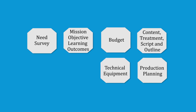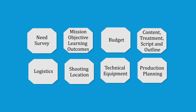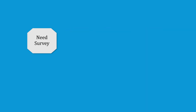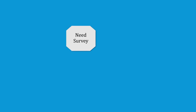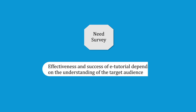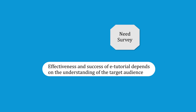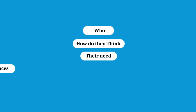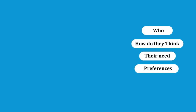What is the technical requirement, technical equipment, what will be the team involved, if there is any outdoor shooting, the shooting location, and other logistics — all that is involved in the planning. The beginning is with the needs survey: the need for making that particular e-tutorial. The effectiveness and success of any e-tutorial depends on the understanding of the target audience — who they are, how they think, what their needs and preferences are — all surveyed through a questionnaire or interviews to establish their characteristics and profile.